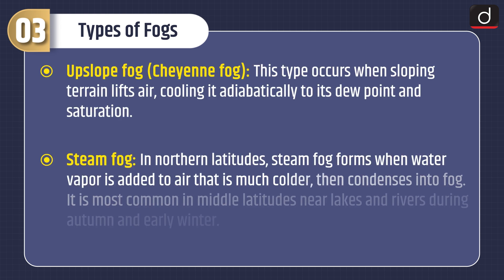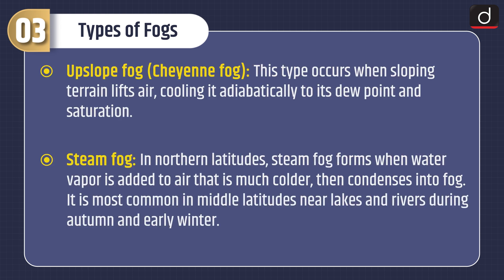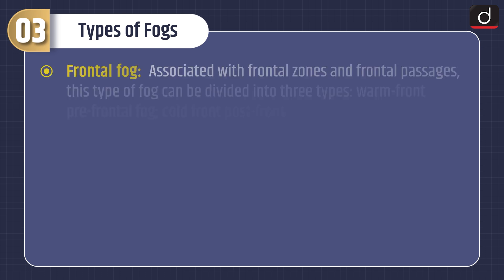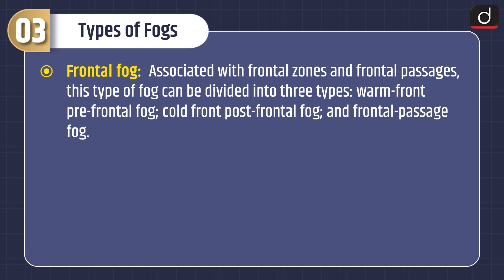Upslope fog occurs when sloping terrain lifts air, cooling it adiabatically to its dew point and saturation. Steam fog forms in northern latitudes when water vapor is added to air that is much colder, then condenses into fog; it is most common in middle latitudes near lakes and rivers during autumn and early winter. Frontal fog, associated with frontal zones and frontal passages, can be divided into three types: warm front pre-frontal fog, cold front post-frontal fog, and frontal passage fog.